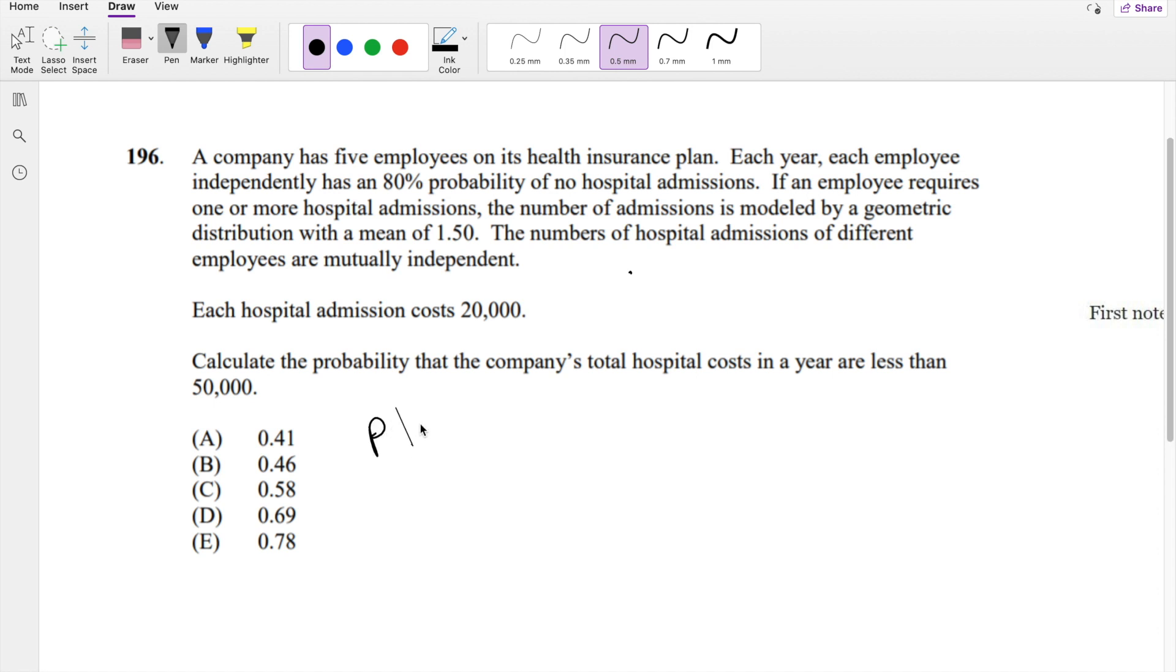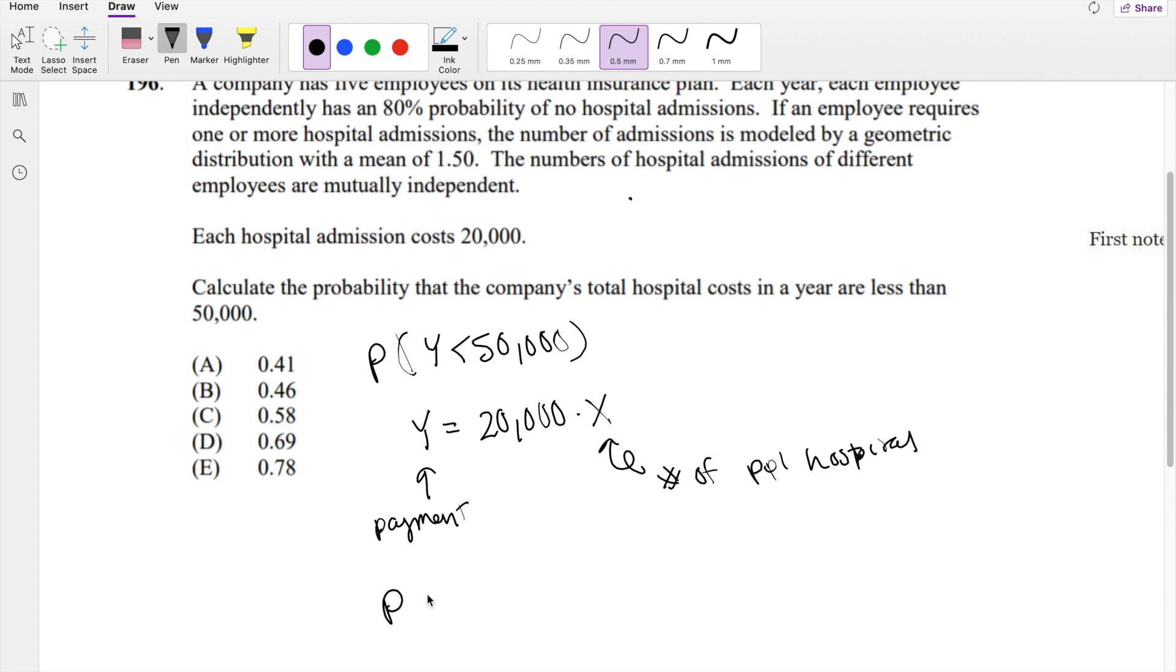Basically the question is, calculate the probability that a company's total hospital costs in a year is less than 50,000, where the company's total hospital cost equals 20,000 times X, where X is the number of people in the hospital and Y is the payment. I can actually just plug that in there and put it in terms of X. So the probability is 20,000X is less than 50,000.